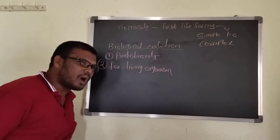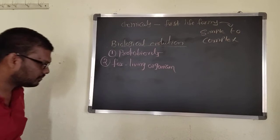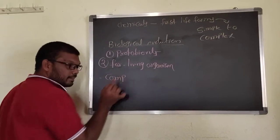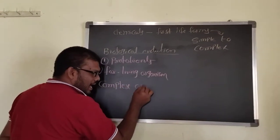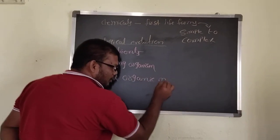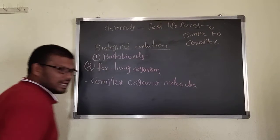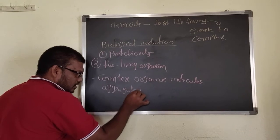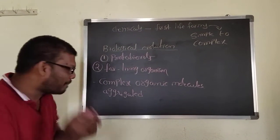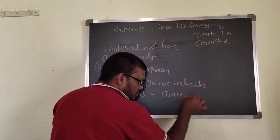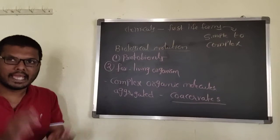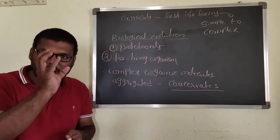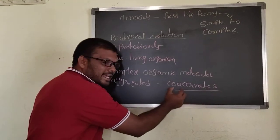The first thing — protobionts. What is meant by protobionts? A complex organic molecules aggregated and formed large lipid droplets — that is called as coacervates. What is a coacervate? Complex organic molecules all aggregate to form a large droplet — that large droplet is called a coacervate.